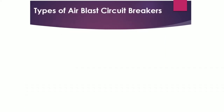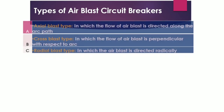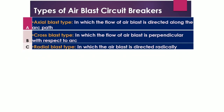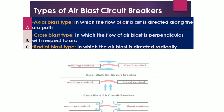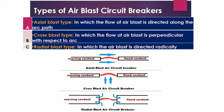There are three main types of air blast circuit breaker: axial type, cross blast type, and radial blast type. In the axial type, the flow of air blast is directed along the arc path. In the cross blast type, the air blast is perpendicular to the arc. In the radial blast type, the air blast is directed radially. In all types, the arc-quenching medium acts in the direction from moving contact to fixed contact.